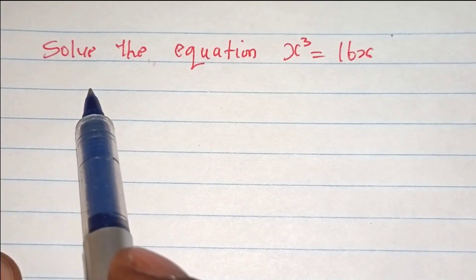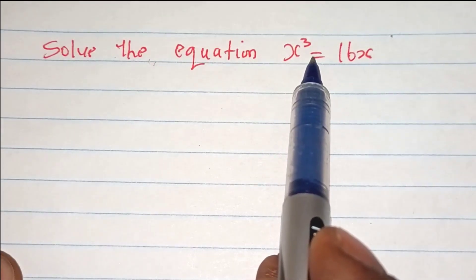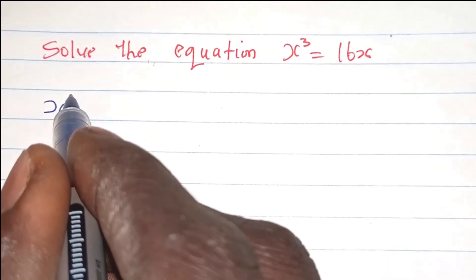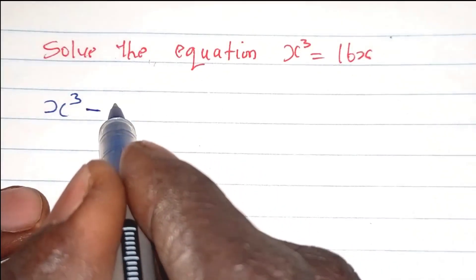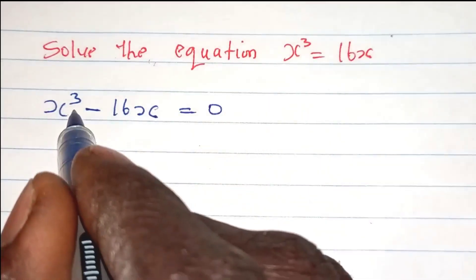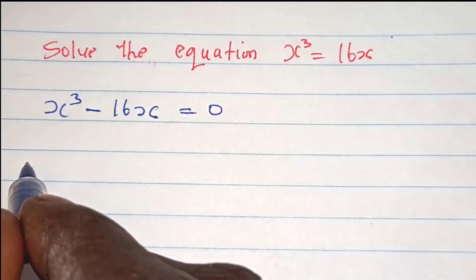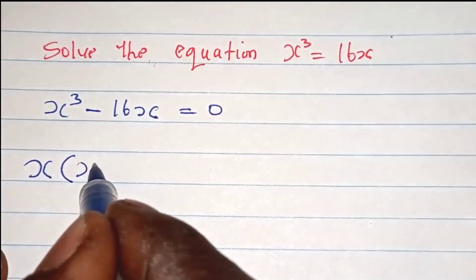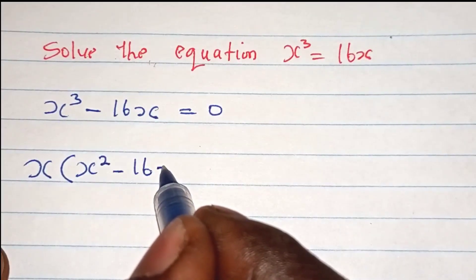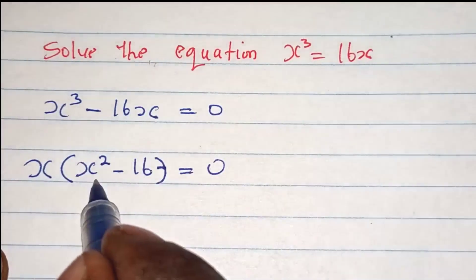First of all, we are to rearrange it into the form of a standard equation. x cubed minus 16x is equal to zero. Factor out x from the left hand side and we get x in bracket x squared minus 16 equals to zero.